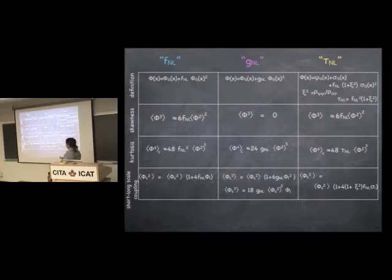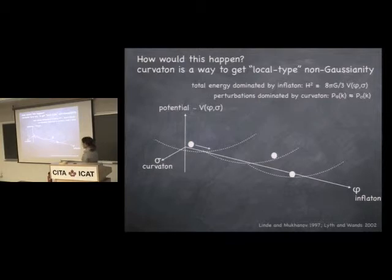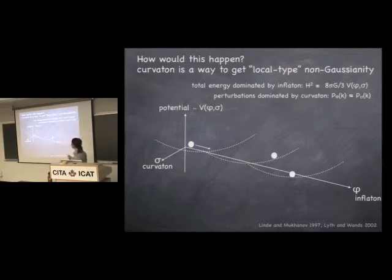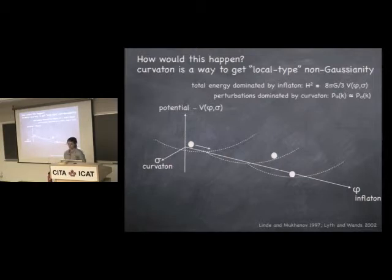But you might wonder whether something like this can actually arise. All of these f_NL, g_NL, tau_NL types of initial conditions can come from variants of the curvaton model. The curvaton model is a two-field model of inflation where the inflaton dominates the background energy density and drives exponential expansion, but the curvaton is the one that sources the perturbations which give rise to structure. So here you decouple the problem of driving inflation from generating perturbations — the curvaton is a second light field that gets excited during inflation and later decays giving rise to the perturbations we see.